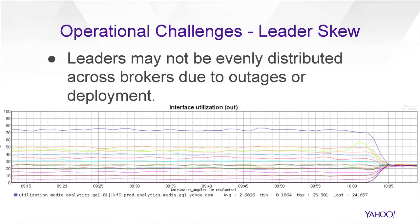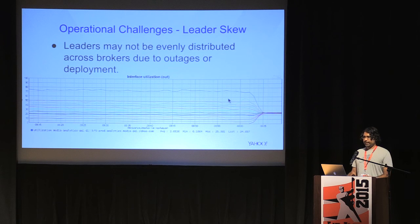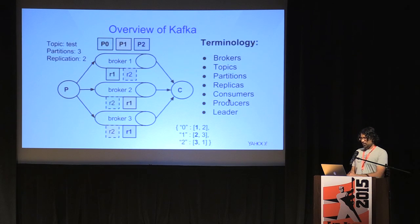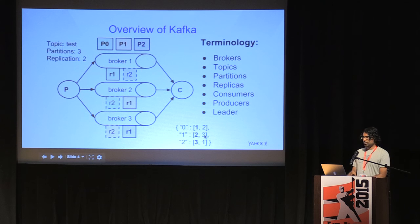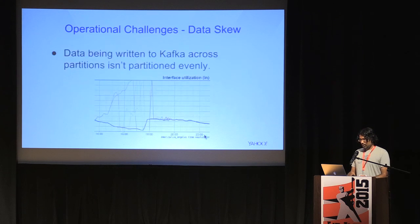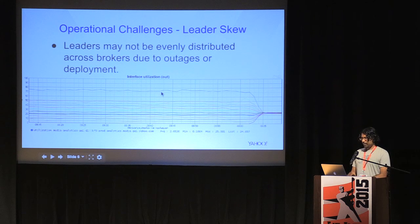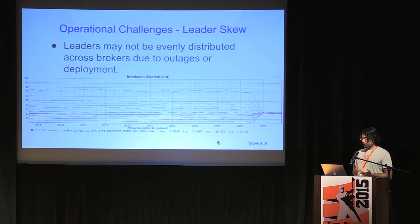Another operational challenge is leader skew. This isn't a problem if you already have automatic preferred leader election enabled in Kafka. It's entirely possible that after an outage, broker 3 becomes a leader but it's not the preferred leader. So in Kafka you have to run the preferred leader election or have it enabled to do it automatically. When you don't have it enabled automatically, you end up with some brokers having many leaders and others having very few, so your network I/O is uneven across your cluster. As soon as you run preferred leader election, all the network I/O normalizes.